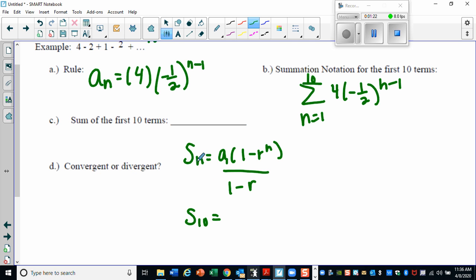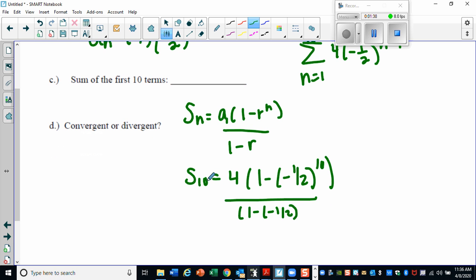So we're summing the first 10 terms. I know my first term is equal to four. I'm doing one minus negative one half, all raised to the 10th because I'm summing 10 terms, all over one minus negative one half. Now there's a lot of negatives here, so let's just make sure, let's actually plug this into our graphing calculator to make sure we're doing this correctly.